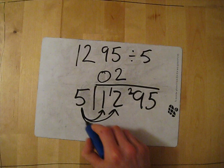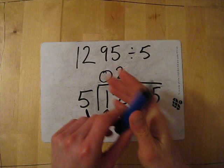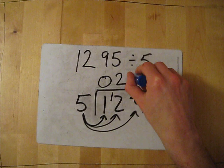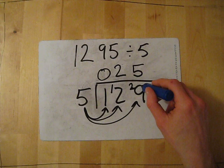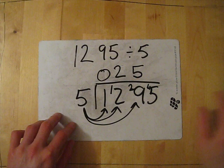Then 5 into 29: 5, 10, 15, 20, 25. 30 is too many, so it fits in 5 times. So 5 times 5 is 25, so from 29 there's 4 left over.